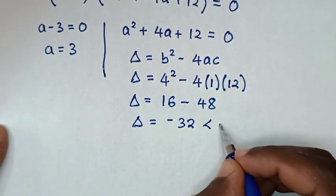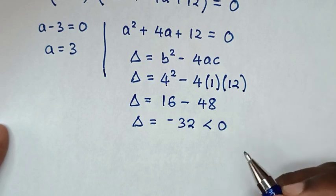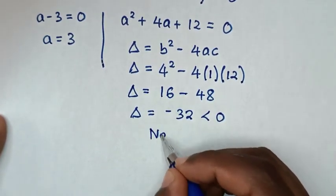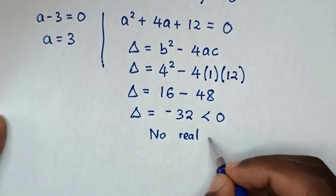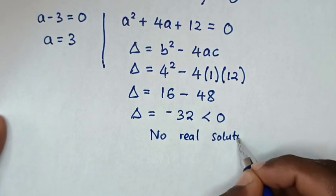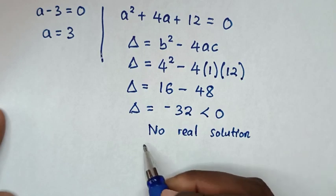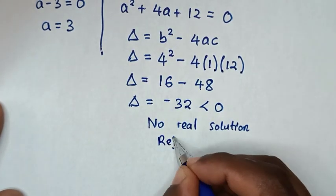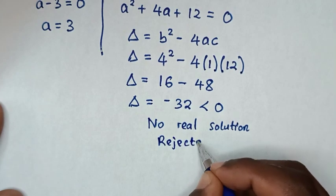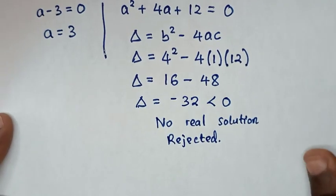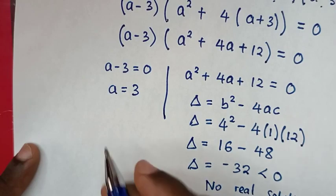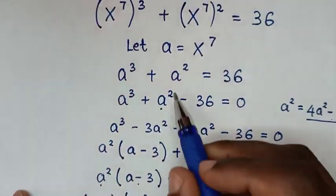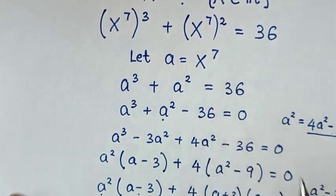Since the discriminant is less than 0, there is no real solution from this factor. So this second solution is rejected. We continue to solve from a equals 3. Before that, recall we let a equal to x power of 7.